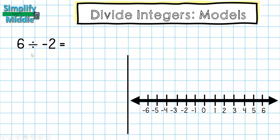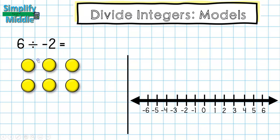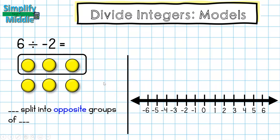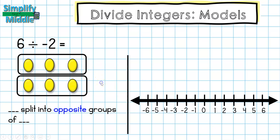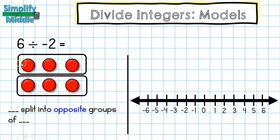Here we have the opposite case: six yellow tiles to start with. Six split into opposite groups of two — first, split into two groups. Then find the opposite at the end by flipping the chips over, since the other side is negative. Counting up one group gives three red chips, so the answer is negative three.